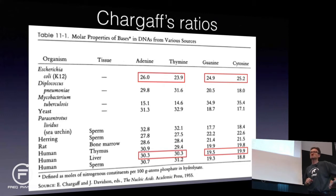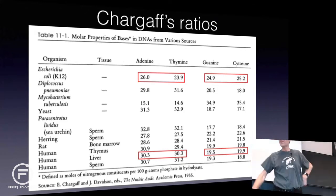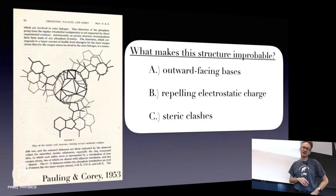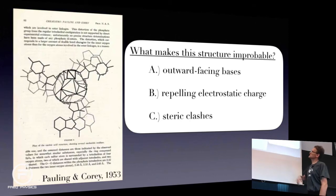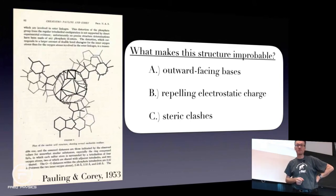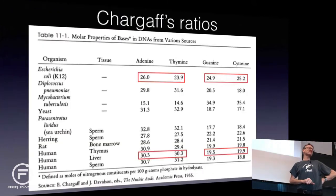That was the one key discovery that two other scientists used. There are a number of problems with the Pauling structure even without Chargaff's rules — those outward-facing bases would need to make hydrogen bonds with water or something on the side. A student asked about the variation in numbers. The answer: it's biology. Noisy.